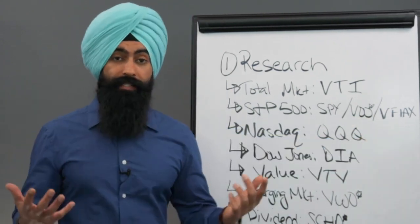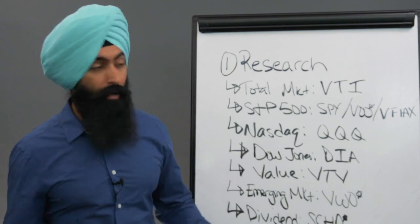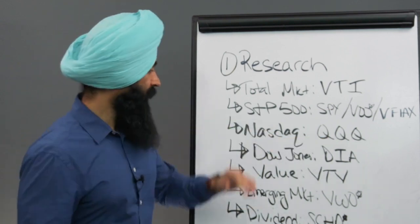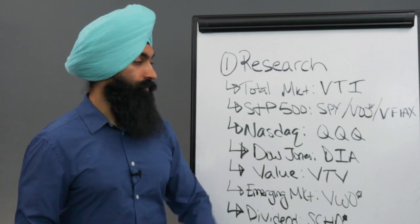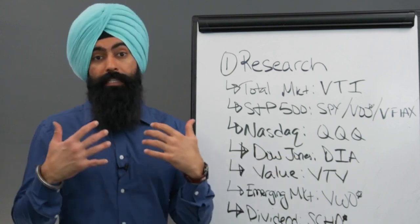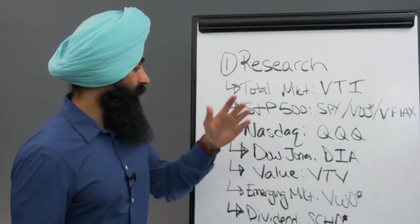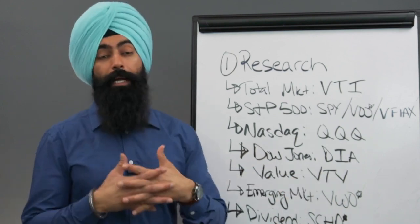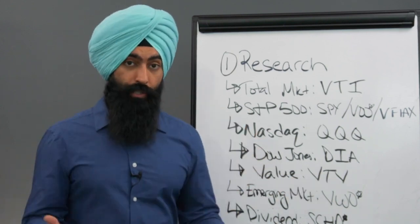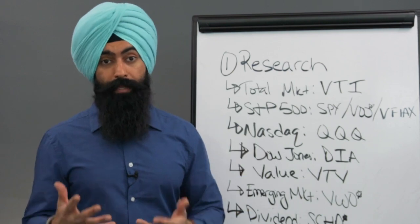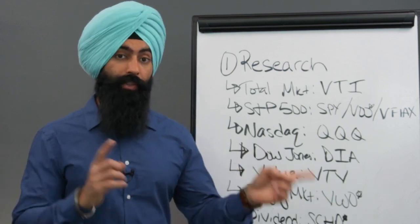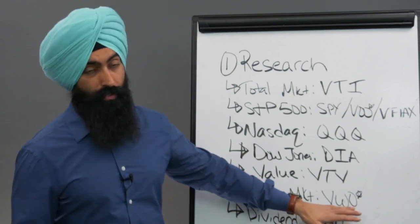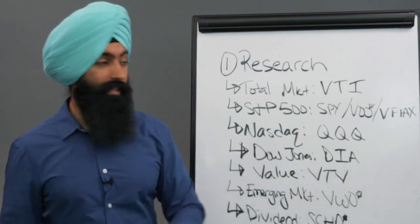If you wanted to invest in the NASDAQ, which has a lot of exposure to tech companies, you can look into the QQQ ETF. If you wanted to invest in the Dow Jones, you have DIA. If you wanted to invest in just value companies, Vanguard has an ETF for that called VTV. If you wanted to invest in emerging markets — countries and companies overseas that don't rely on the dollar and are working to grow — this is VWO, and it's a way to diversify your money outside of the United States.